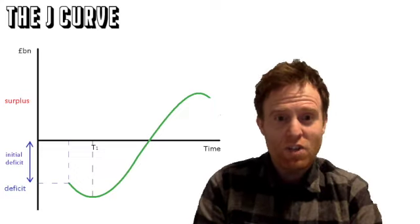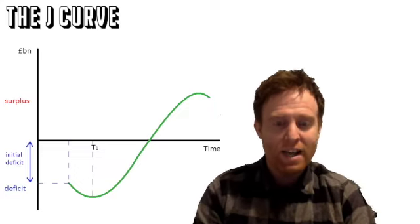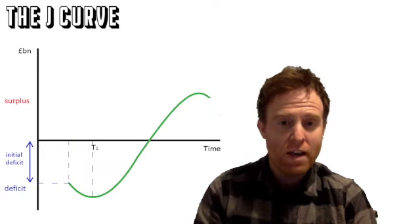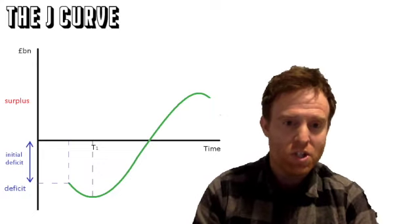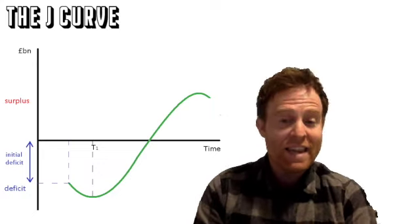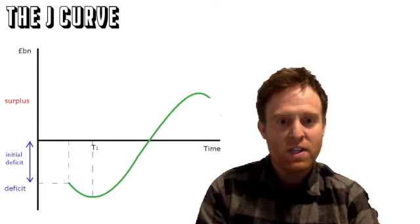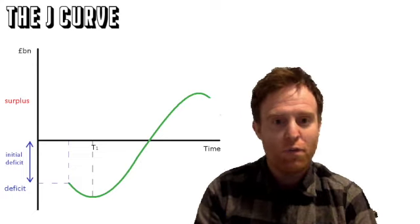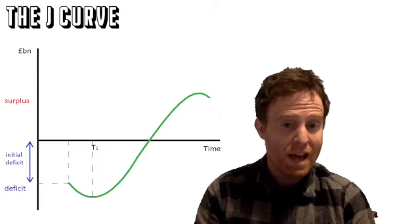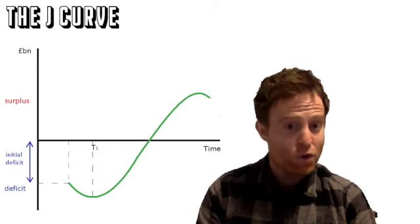This video is based on international trade and looks at the J-curve. It's a full-on video from the Marshall-Lerner Condition and relates to a current account deficit and an expenditure switching policy of devaluation and the impact it can have on a current account deficit.